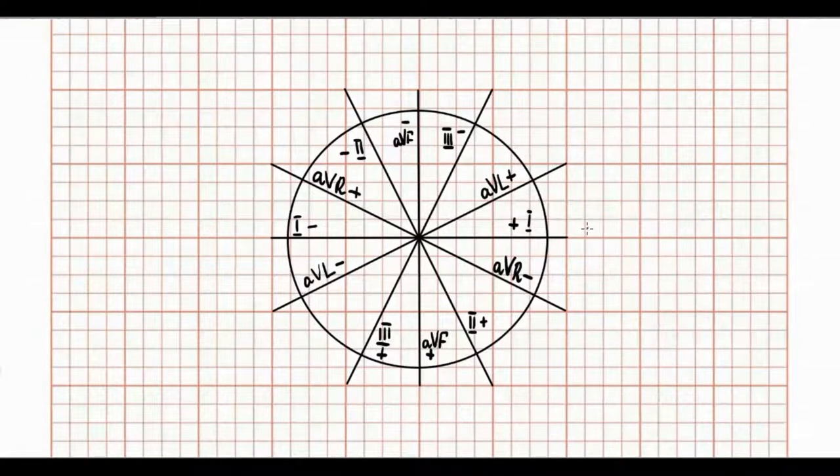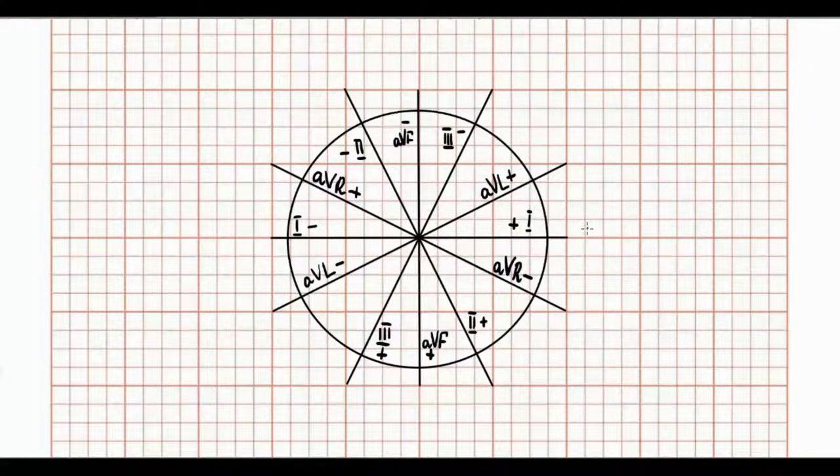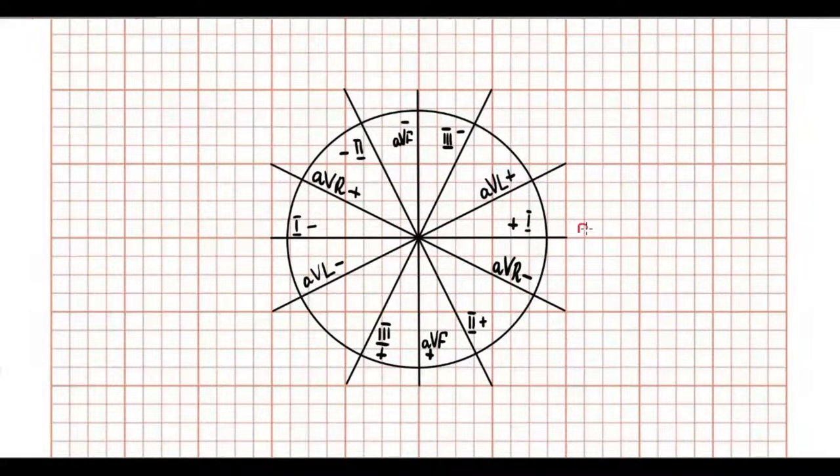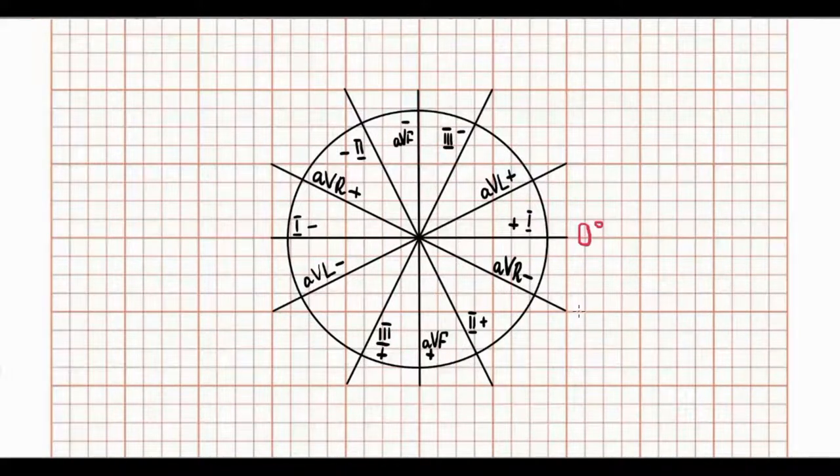The spatial orientation of the six extremity leads forms the hexaxial diagram. We add the degree scale to the hexaxial diagram for describing the mean QRS axis. The positive pole of the first standard lead is the zero point.